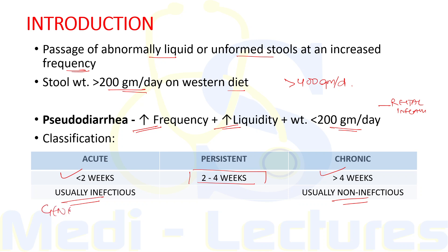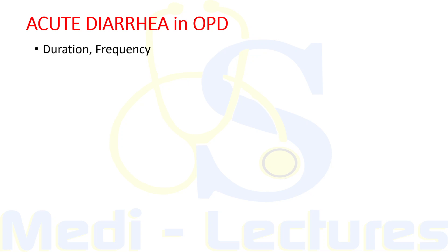Acute diarrhea is managed by the general medicine department, as the infections causing diarrhea are treated there. Chronic diarrhea requires further evaluation for diagnosis and these patients are usually referred to a gastroenterologist. We will restrict ourselves to discussion of acute diarrhea presenting in the OPD, and at the end we will briefly cover the alarming features and causes relevant to chronic diarrhea.